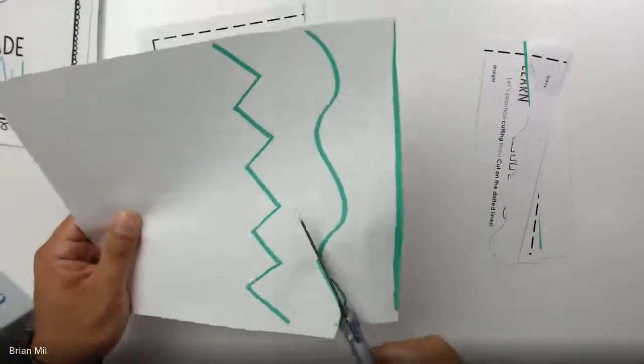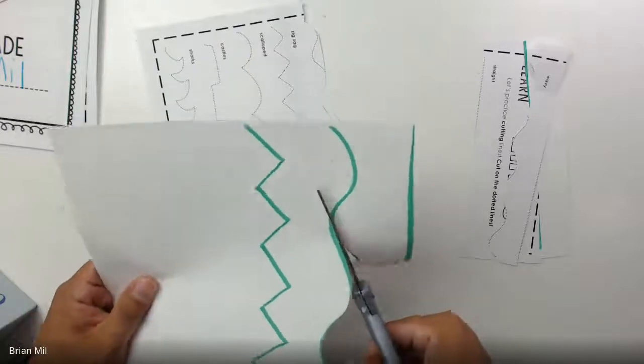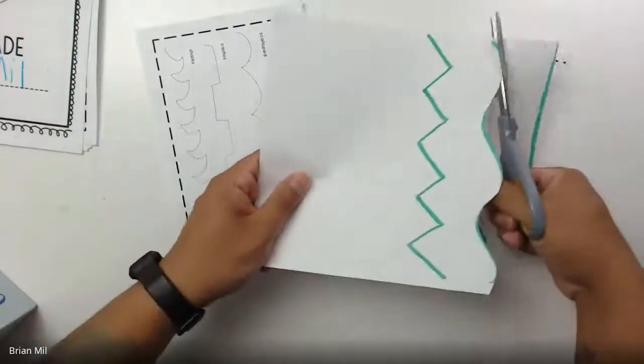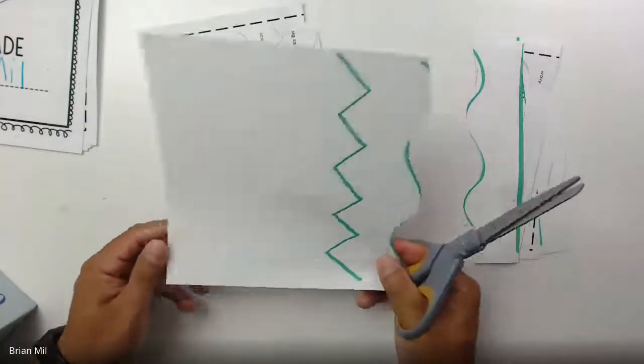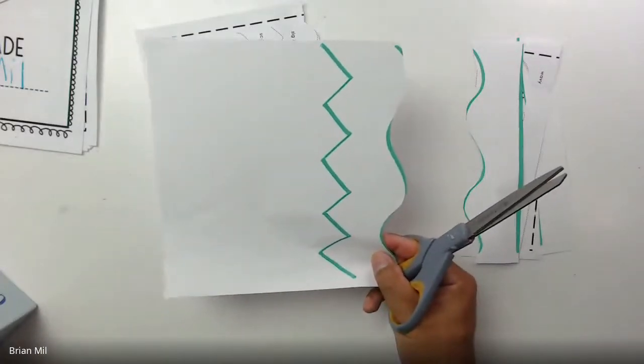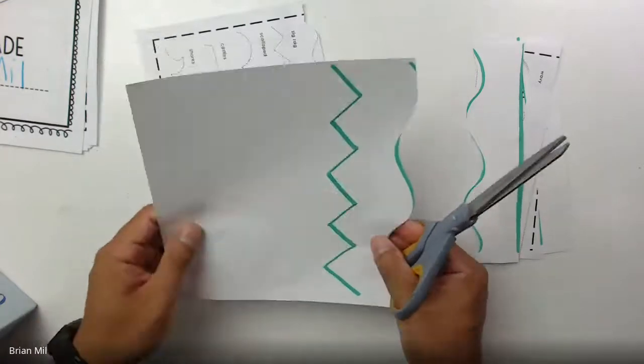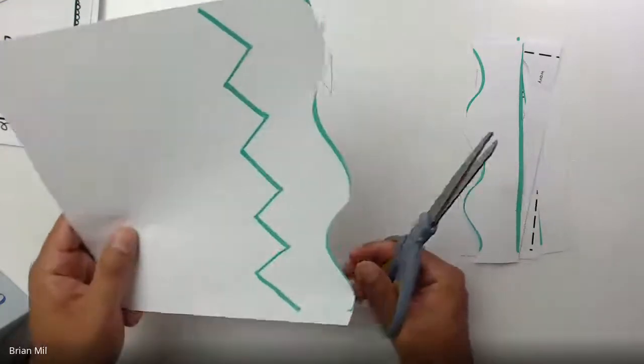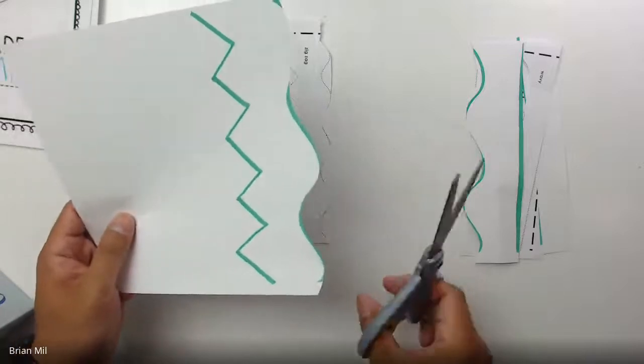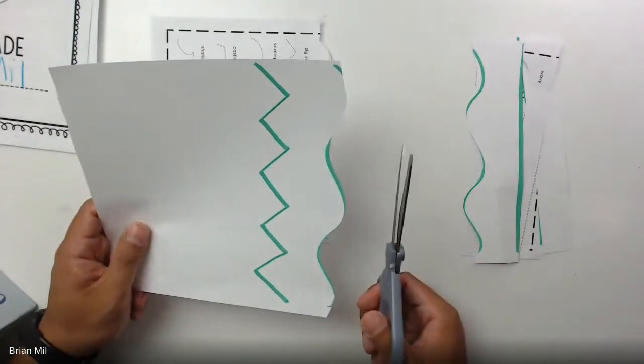If you make a mistake like me—oh my gosh, Mr. Mill made a mistake—that's okay, it's only practice. If you make a mistake like how I did just now, it's completely fine. These are just practice sheets. I'm going to put it in my scrap pile so I can recycle it later.